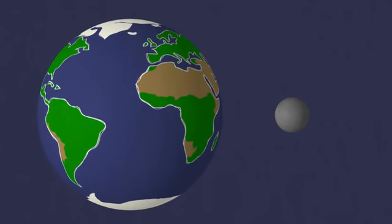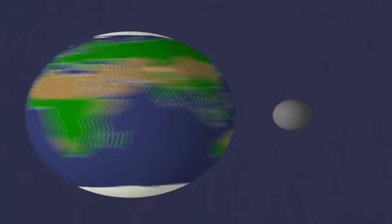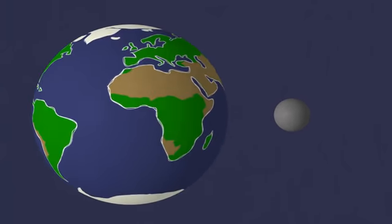Dwarf planets are a lot like regular planets. They both have enough mass and gravity to be nearly round, unlike odd-shaped asteroids.